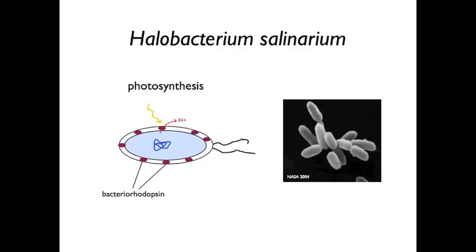This protein is a proton pump called bacteriorhodopsin. It uses light photons to pump hydrogen ions across the plasma membrane to create a proton gradient.